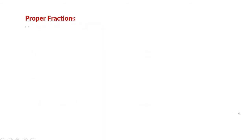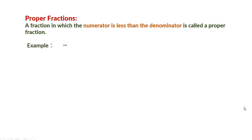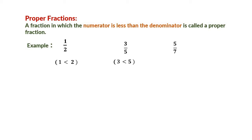What is a proper fraction? A fraction in which the numerator is less than the denominator is called a proper fraction. For example, 1 by 2, where numerator 1 is less than 2. Another example is 3 by 5, where numerator 3 is smaller than denominator 5. And 5 by 7, where numerator 5 is smaller than 7.